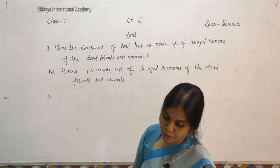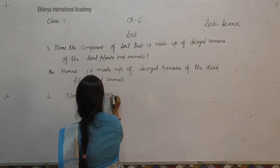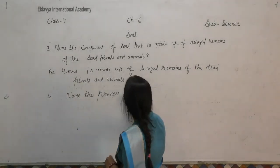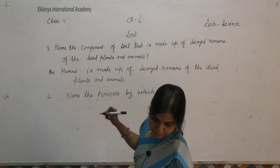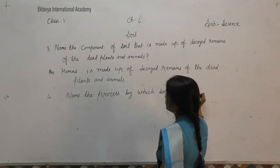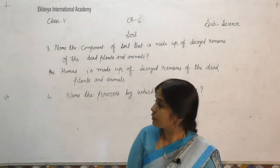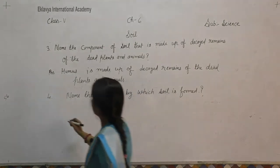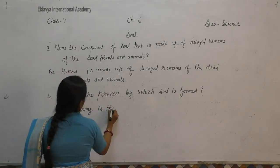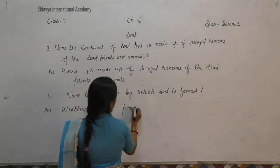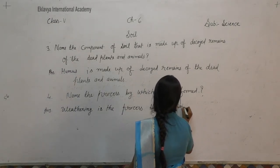Fourth question: name the process by which soil is formed. Soil ka formation jis process ke dwara hota hai — so the answer is weathering. Weathering is the process by which soil is formed.